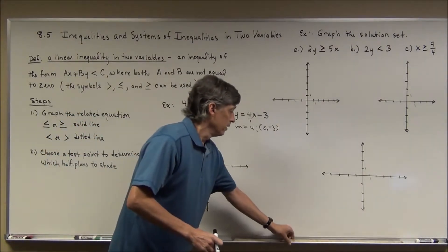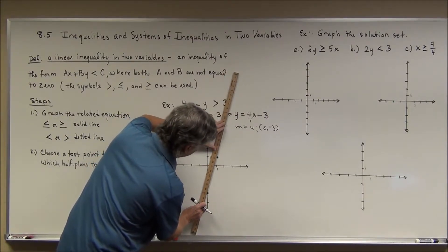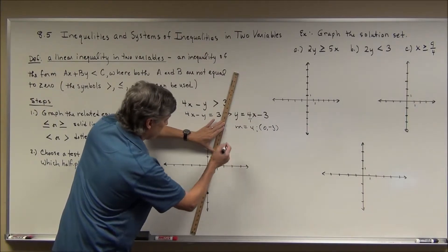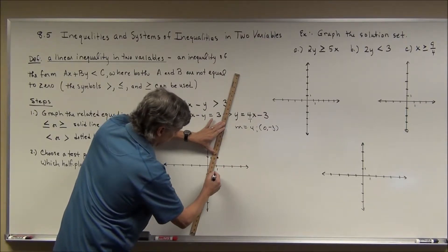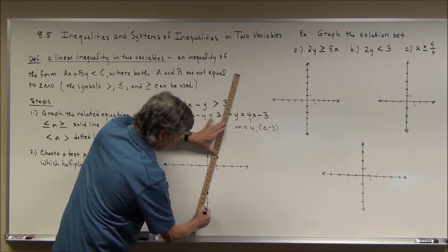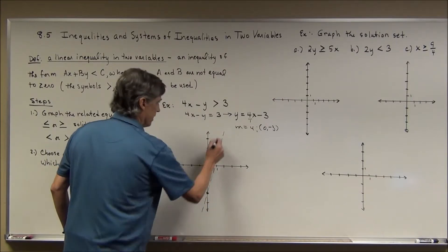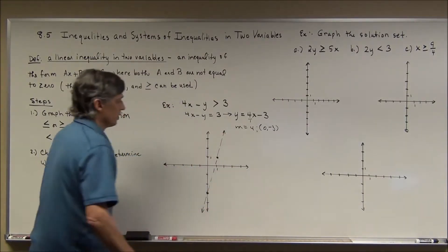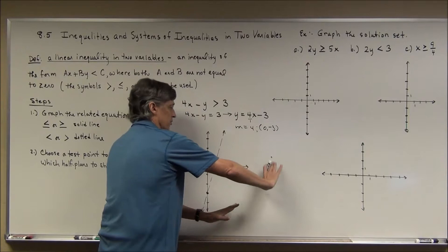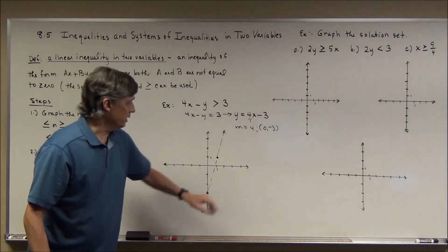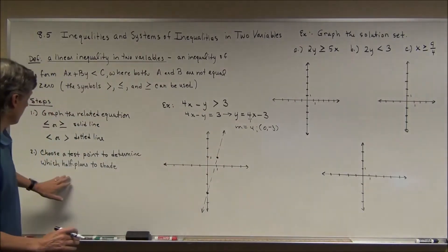I'll line that up with a yardstick as best I can on the whiteboard. The dotted boundary line separates this half plane up and to the left from the half plane down and to the right. One of these half planes has all the solutions, the other does not. So we have to determine which side to shade.